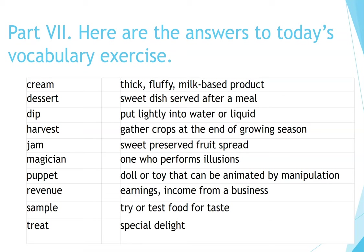Cream — thick, fluffy, milk-based product. Dessert — sweet dish served after a meal. Dip — put lightly into water or liquid. Harvest — gather crops at the end of growing season. Jam — sweet preserved fruit spread. Magician — one who performs illusions. Puppet — doll or toy that can be animated by manipulation. Revenue — earnings, income from a business. Sample — try or test food for taste. Treat — special delight.